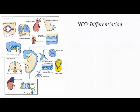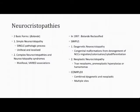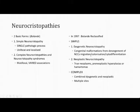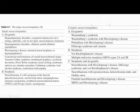Neurochristopathies were initially broadly classified into two basic forms: simple neurochristopathy — unifocal and localized single pathologic processes — and complex neurochristopathy syndromes, which are multifocal with varied associations. In 1997, with more than 20 neurochristopathies described, Bolande reclassified them further: simple neurochristopathies were subdivided into dysgenetic (congenital malformations due to derangement of neural crest migration, colonization, or cytodifferentiation) and neoplastic (true neoplasms, pre-neoplastic hyperplasias, or hamartomas). Complex neurochristopathies combine dysgenetic and neoplastic features at multiple sites.